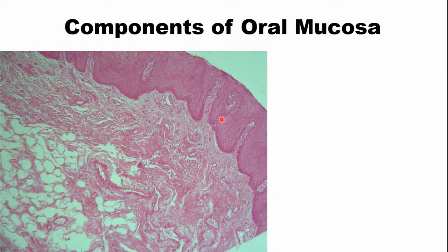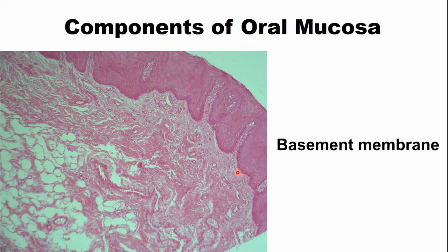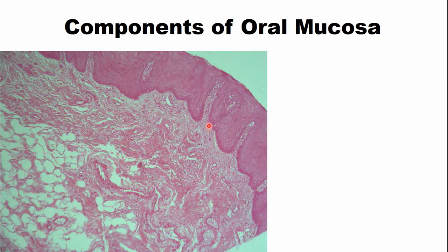At the interface of the epithelium and the connective tissue, a layer is present called the basement membrane. This basement membrane is not visible in these histological slides and is visible only through special staining methods.